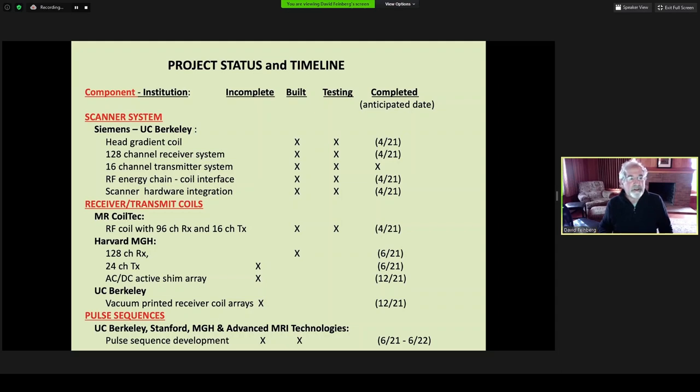This includes a very novel new head gradient coil, 128-channel receiver transmit system, and new coil interface box. The receiver transmit coils are being designed and built in three different groups. A small company, MR CoilTech, we currently have a 96-channel coil from them, and we're testing it.